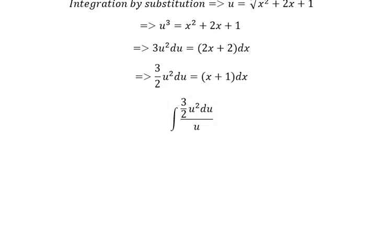Now we have 3/2 times the integral of u, because u² divided by u gives us u. And now we get (3/4)u² plus c.